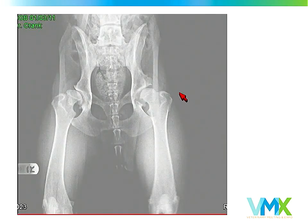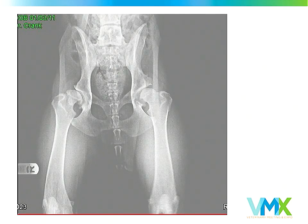For severe dysplasia, it's a no-brainer. You put it on the view box and tell the owner don't waste your money. Obviously we have a dysplastic, subluxated dog with marked remodeling of the femoral necks, acetabular rim changes, a huge osteophyte on the cranial margin of the left acetabulum, and additional remodeling of the caudal acetabular margin.